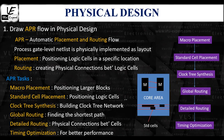The automatic placement and routing flow involves several stages: macro placement, followed by standard cell placement, then clock tree synthesis, followed by global routing, then detailed routing, and finally timing optimization.